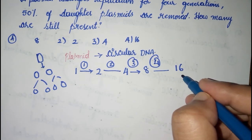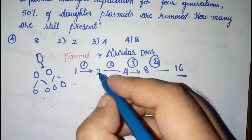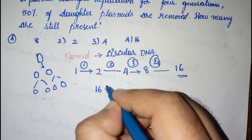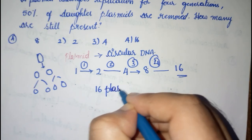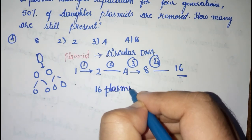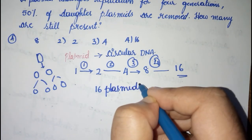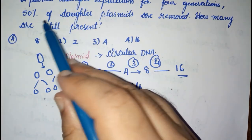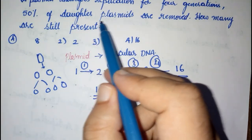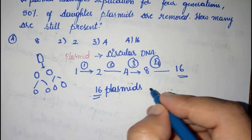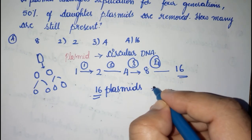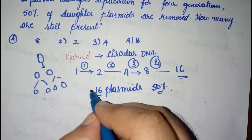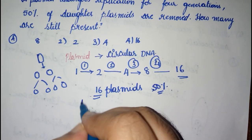So at the end of the fourth replication we have sixteen plasmids. But the question says fifty percent of the daughter plasmids are removed. Fifty percent of sixteen is eight plasmids.